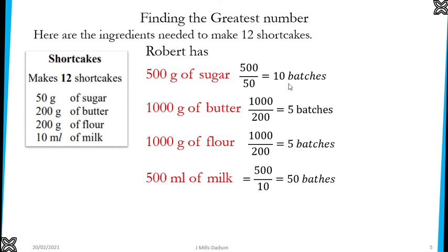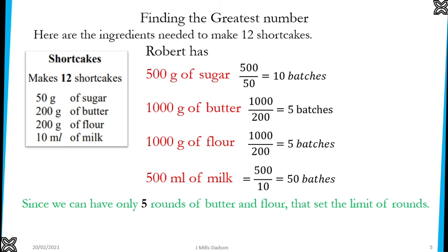So butter and flour will limit the number of batches you can pick from the ingredients. Because once you go for 5 batches, there will be none of butter and flour left. Therefore you will be left with only sugar and milk, and you cannot make shortcakes with only those two. So you have to stop. The biggest batch you could ever pick is 5. But remember, each batch makes 12 shortcakes.